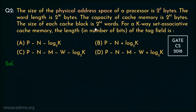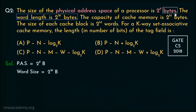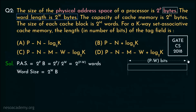Let's solve this. The physical address space is 2 to the power p bytes, and the word length is 2 to the power w bytes. Since the word size is mentioned, we must convert the physical address space to words. Dividing 2 to the power p by 2 to the power w gives us 2 to the power (p minus w) words. Therefore, p minus w bits will be used for the physical address.